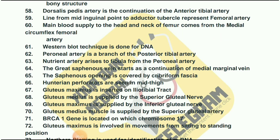The line from the mid-inguinal point to the adductor tubercle represents the femoral artery. The main blood supply to the head and neck of the femur comes from the medial circumflex femoral artery. Western blot technique is done for DNA. The peroneal artery is a branch of the posterior tibial artery.